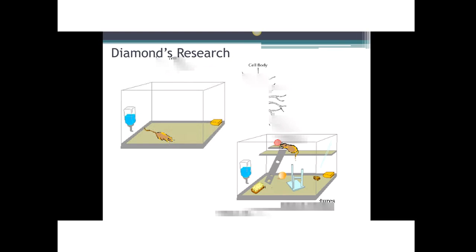In the 1960s, Marion Diamond, Mark Rosenzweig, and their colleagues at the University of California, Berkeley demonstrated that substantial changes in the brain's architecture can be influenced by an animal's environment. Later, William Greenough at the University of Illinois extended that research. Enrichment for the rats was provided by placing a colony together in a large cage with toys changed every few days. The impoverished environment had sufficient food and water but nothing to play with and no one to socialize with.